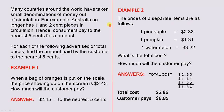Many countries around the world have taken small denominations of money out of circulation. For example, Australia no longer has 1 and 2 cent pieces in circulation. Hence, consumers pay to the nearest 5 cents for a product. Example 1: When a bag of oranges is put on the scale, the price showing up on the screen is $2.43. The customer pays $2.45 to the nearest 5 cents.